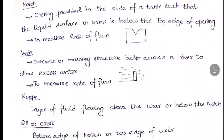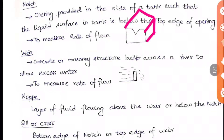Imagine a tank and you make an opening in any one side. What happens is that the water level in the tank can only be up to the bottom of that opening, otherwise it overflows above that. Here I have drawn a triangular notch. If water is present in this tank, the water flow comes through this notch only up to the bottom edge. Up to this point only the water can be kept inside the tank. This is called a notch and it is used to measure the rate of flow.